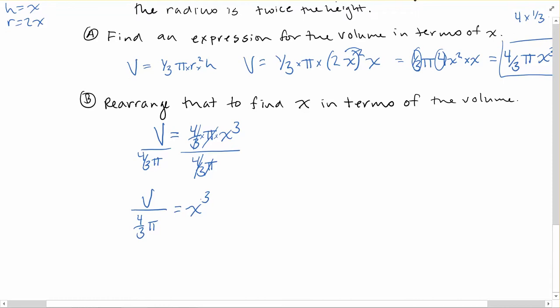Now x cubed is not yet x. We need to get that by itself. So just like you would undo a square with a square root, we can undo a cube with a cube root. So we're going to take the cube root to both sides of the equation. That will cancel the cubed, and we're left with x is equal to the cube root of v all over 4 thirds pi. And that can work for us.